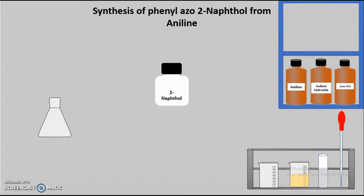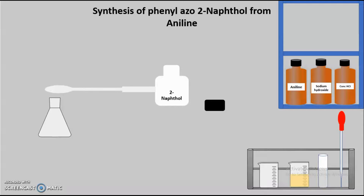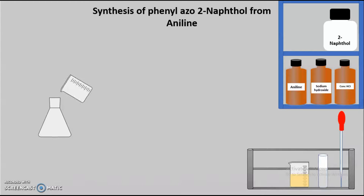Here you can see we are taking the 2-naphthol. Again, we are measuring the required quantity — 4 grams of 2-naphthol is measured with the help of a spatula on the balance, and that quantity is added into our conical flask. Also, in this conical flask we are going to add the 10% sodium hydroxide solution — that is, 22.5 ml of 10% sodium hydroxide solution is required. We have placed that sodium hydroxide solution into a beaker and we are taking that particular solution and adding it into the conical flask. In this way, we have prepared the third solution — the beta-naphthol solution.